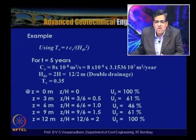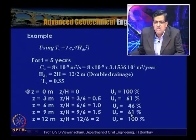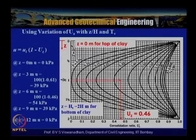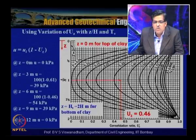Reading from the chart for Tv = 0.35: at z/h = 0 and z/h = 2 (boundaries), Uz = 100%; at z/h = 0.5 (z = 3 m), Uz = 0.61; at z/h = 1 (z = 6 m, mid-depth), Uz = 0.46. Using u = ui(1 − Uz): at z = 0 m, u = 0 kPa; at z = 3 m, u = 39 kPa; at z = 6 m, u = 54 kPa; at z = 9 m, u = 39 kPa; at z = 12 m, u = 0 kPa.